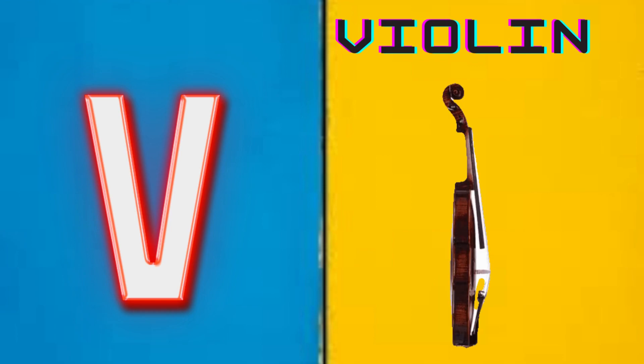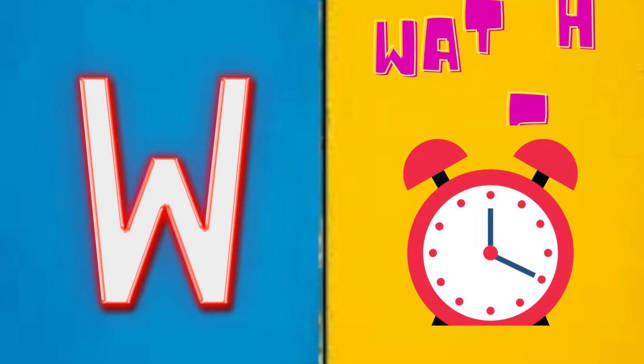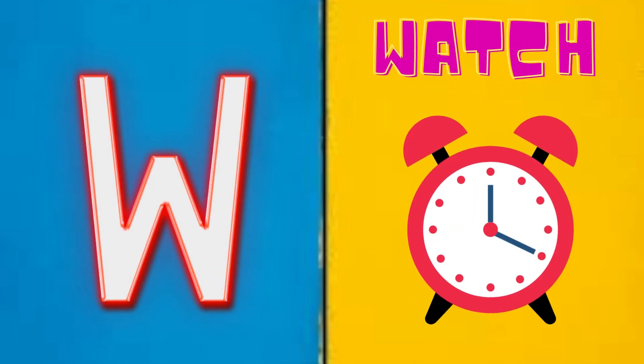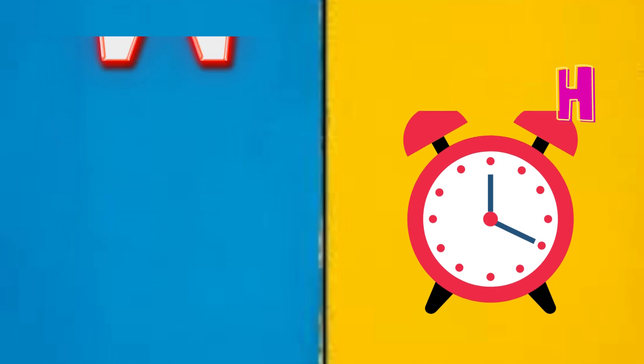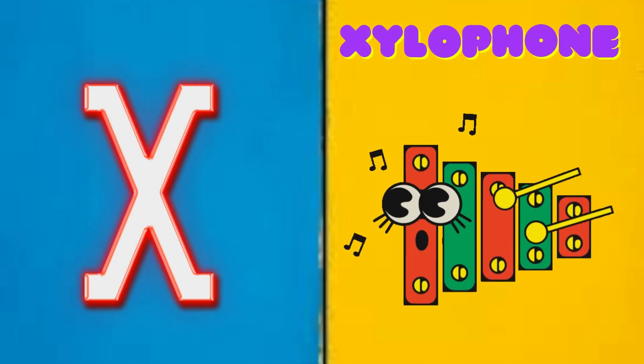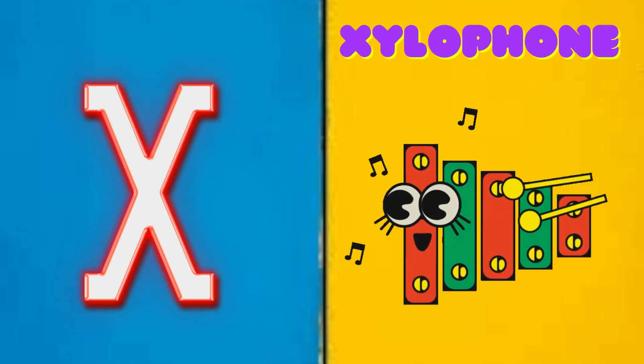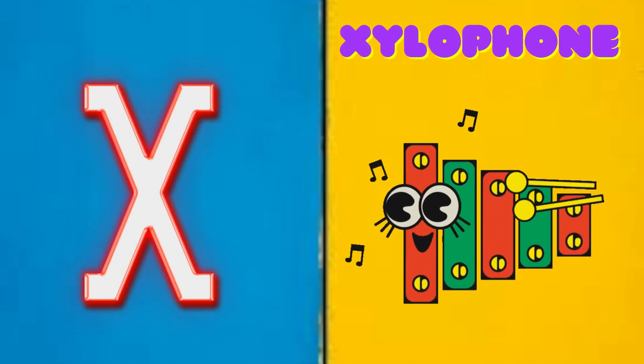V is for violin, v-v-violin. W is for watch, w-w-watch. X is for xylophone, x-x-xylophone.